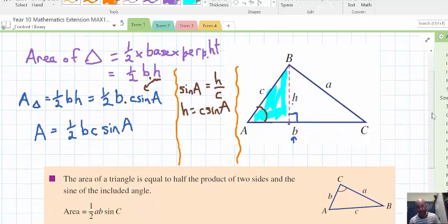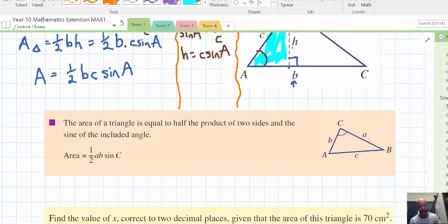Let's look at it more formally now. The area of a triangle is equal to half the product. So half the product of two sides. That means timesing. Two sides. And the sine of the included angle.